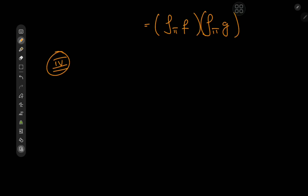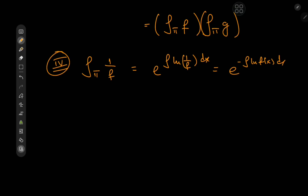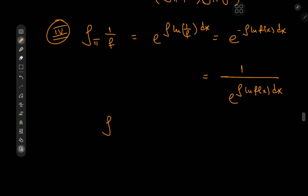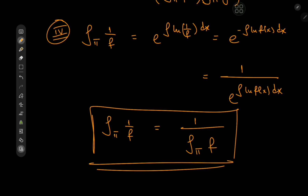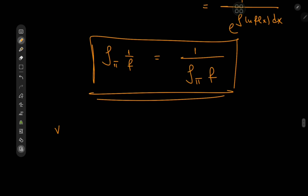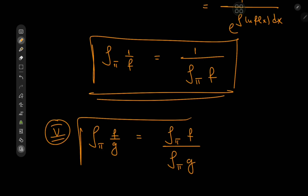Another interesting property: the product integral of 1/f equals e to the integral of log(1/f) dx. Since log(1/f) = −log f, this is e to the negative of ∫log f dx, which is 1 divided by the product integral of f. So the product integral of 1/f equals 1 over the product integral of f. Using this together with the product rule gives Property 5 — the quotient rule: the product integral of f/g equals the product integral of f divided by the product integral of g.